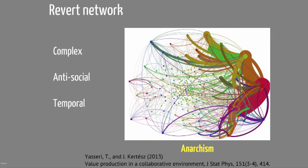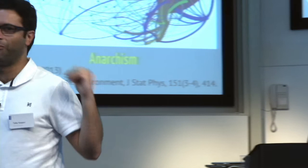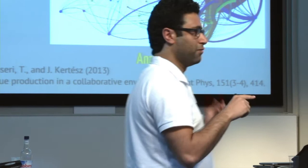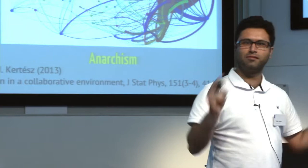You can build a network from these reverts. For the article on anarchism, the nodes are editors and the links are the reverts between them — the thicker they are, the more reverts have been done between those two editors. You could see some people spend their lives just reverting others. It's an anti-social network, because unlike regular social networks where two people are connected if they like each other, here people are connected if they hate each other — so you don't see many triangles. It's also a temporal network, starting from zero and growing over time.